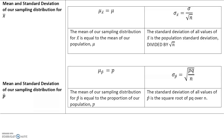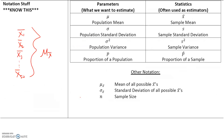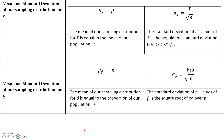The mean of our sampling distribution for x-bar is equal to the mean of the population, mu. So if you take all these different sample means and take the mean of all of them, that will actually equal the actual population mean. The standard deviation of sample means is the population standard deviation divided by the square root of n, where n is the sample size. For proportions, the mean of all sample proportions equals the population proportion p, and the standard deviation of sample proportions is the square root of pq over n, where q equals 1 minus p.